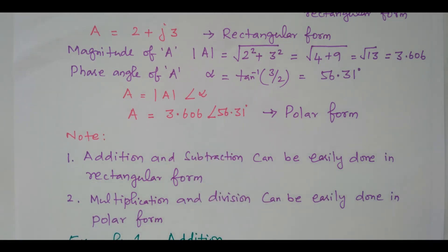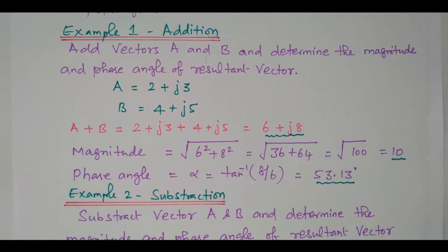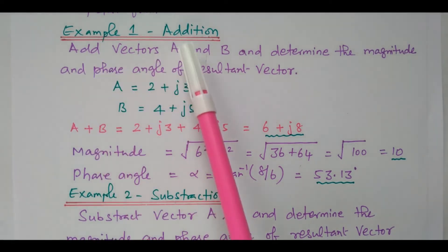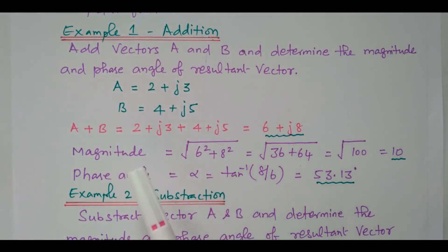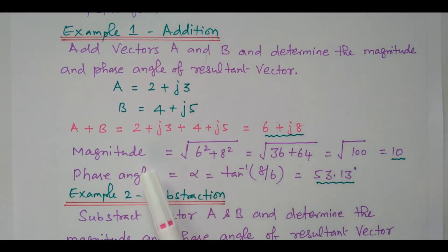During multiplication and division, the polar form can be used, because we have magnitude and angle so that we can easily work with the polar form. Based on that, we will go to some example problems.